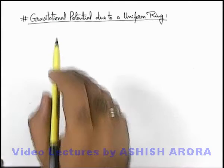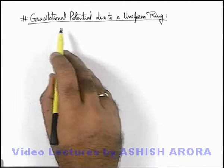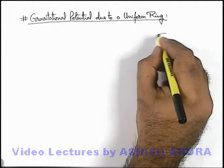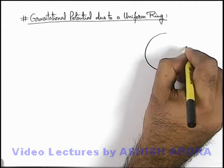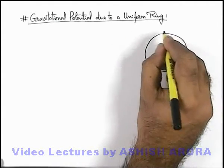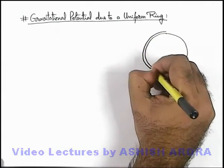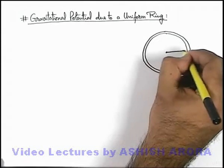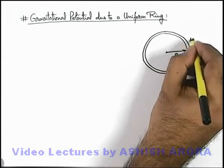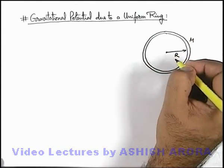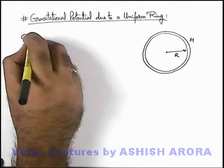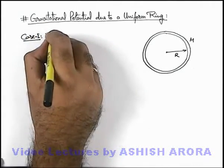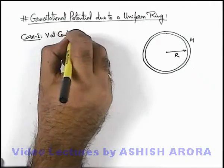Now we'll calculate gravitational potential due to a uniform ring. For a uniform ring we'll study gravitational potential at 2 different points. This is a ring of radius r and its mass is m. We consider Case 1: to find out potential V at the centre of the ring.